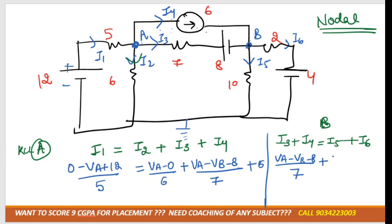I4 again is 6. I5 is VB minus 0 divided by 10, and I6 is VB minus 4 minus 0 divided by 2. Now we have two variables and two equations. We can solve these and get the value of V.